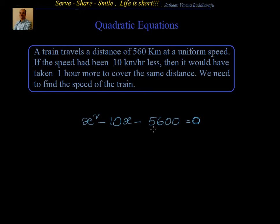Now how to solve the quadratic equation? The first method is factorization, splitting the middle term which we know since long time. We have to find out two numbers such that sum equals minus 10 and the product equals minus 5600. We see that the product is negative, that means one number is negative and the other is positive. The sum is negative, so the bigger number is negative and the smaller number is positive.